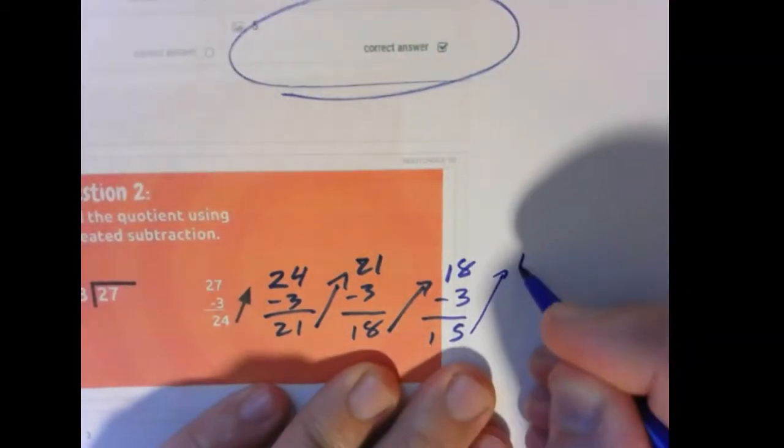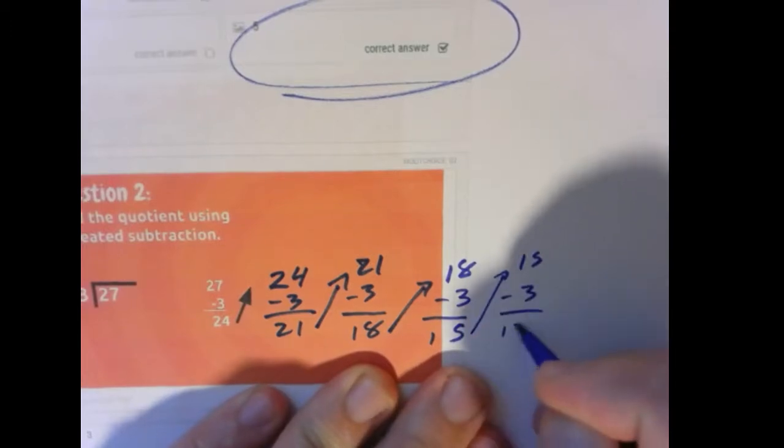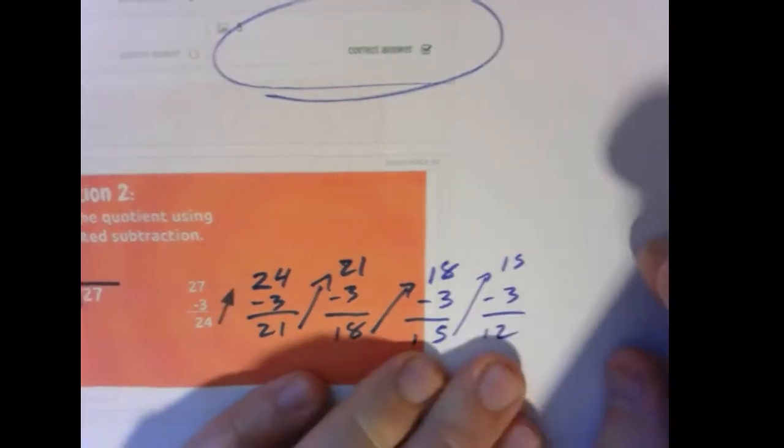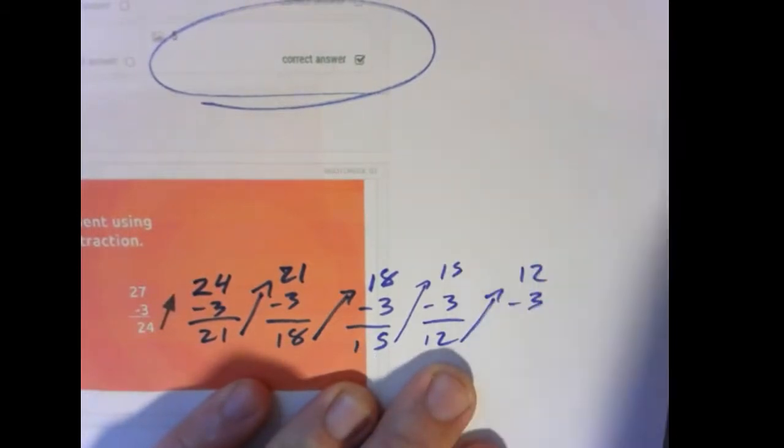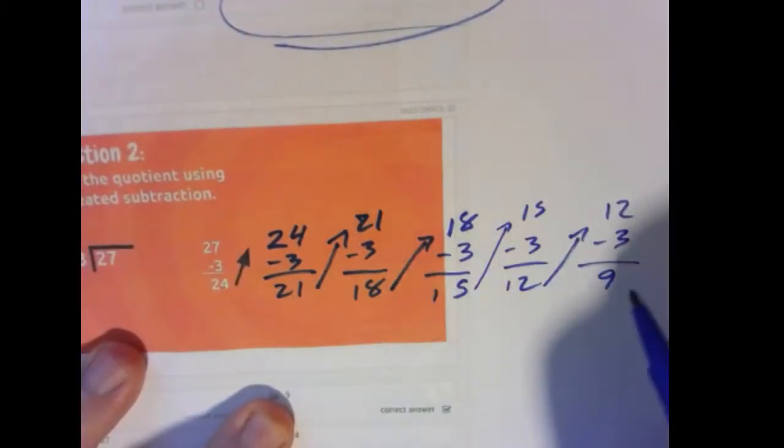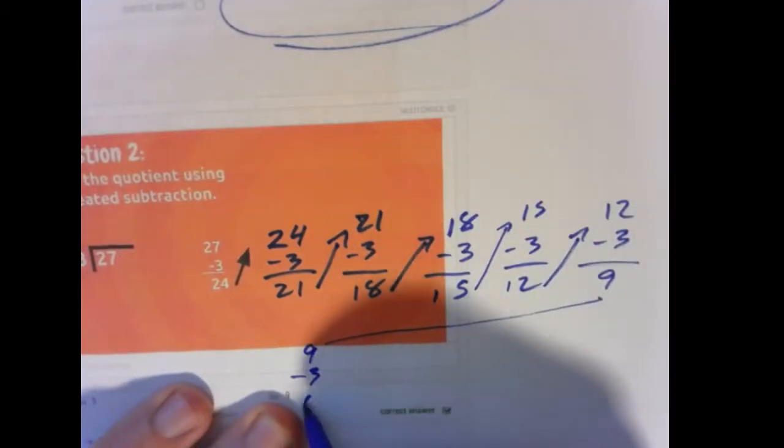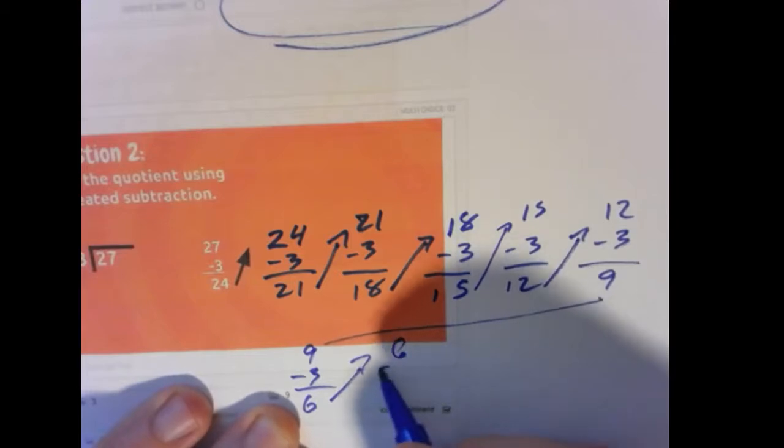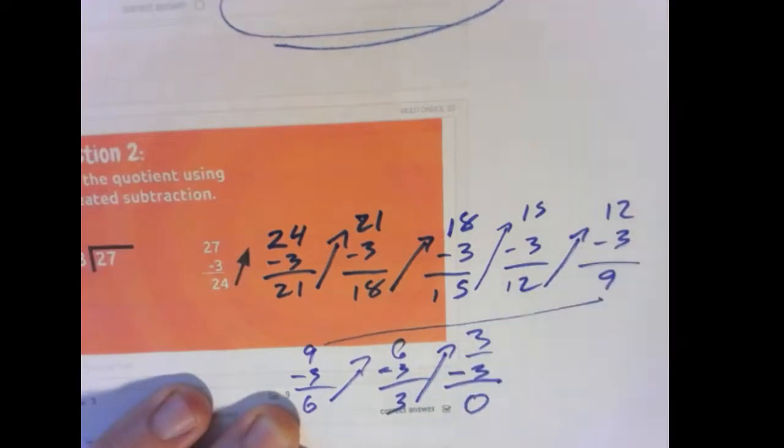Bring 12 up. 12 minus 3 gives us 9. Running out of paper, so let's bring the 9 over here. 9 minus 3 gives us 6. 6 minus 3 gives us 3. 3 minus 3 gives us 0.